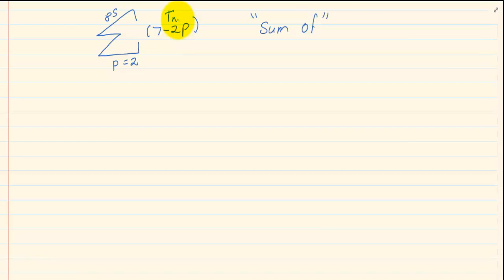So if I wanted term 1, I would substitute into p the first allocated value of p, which in this case is 2. Remember there is no rule that the p has to start from 1. You always start the substitution with what is given at the bottom of the sigma notation.